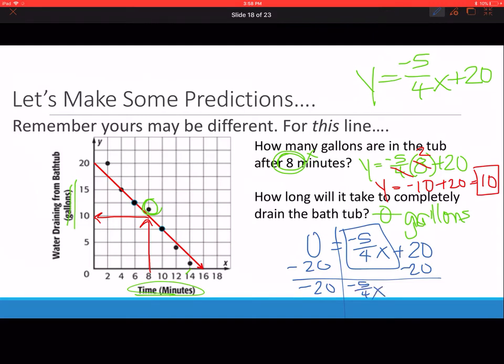How do we get rid of our fraction coefficients? We multiply by the reciprocal, 4 over negative 5. Don't lose your negatives. Please cross cancel, it makes life easier. Negative 5 cancels with the negative 20 and gives you a positive 4, and 4 times 4 is 16. So x is 16 minutes. You can also see our line ended up at 16. Our graph and our math match.